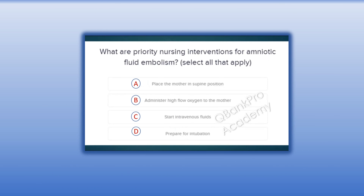What are the priority interventions for amniotic fluid embolism? Select all that apply. A. Place the mother in supine position. B. Administer high-flow oxygen to the mother. C. Start intravenous fluids. D. Prepare for intubation.